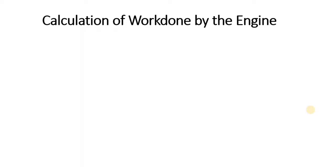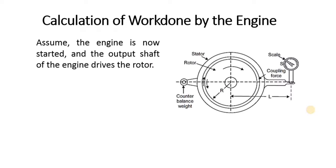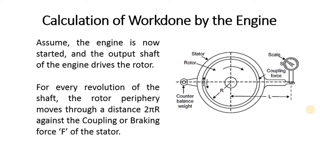Calculation of work done by the engine. Assume the engine is now started and the output shaft of the engine drives the rotor. For every revolution of the shaft, the rotor periphery moves through a distance 2πR against the coupling force or braking force F of the stator.